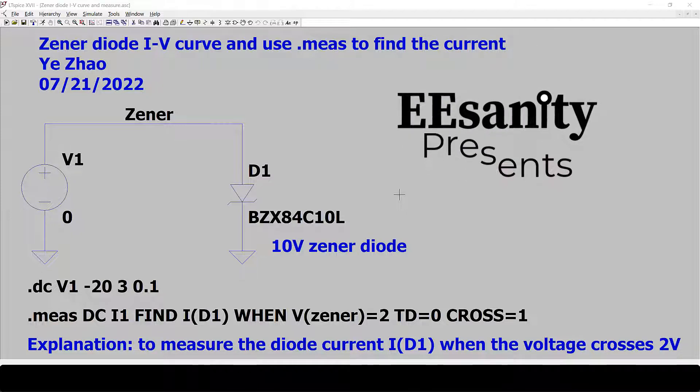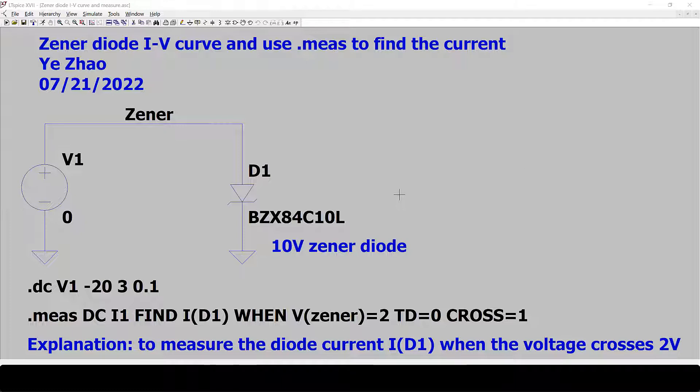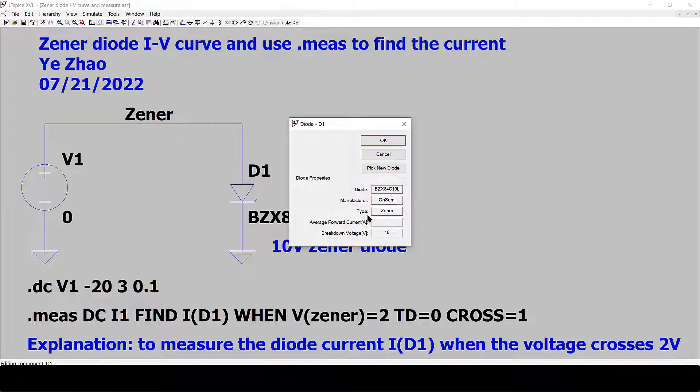In this example, I want to show you how to use measure to find certain values under a DC sweep in LTSpice. As shown here, we have a Zener diode. It's a 10V Zener by OnSemi. The breakdown voltage is 10V.